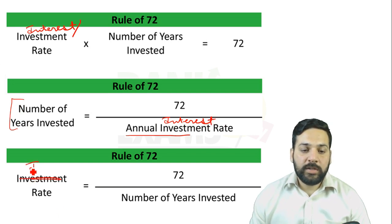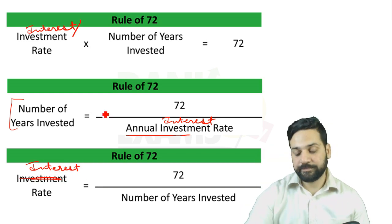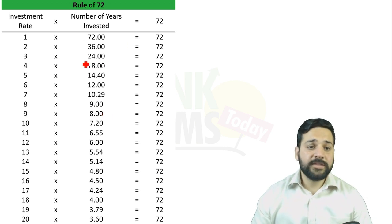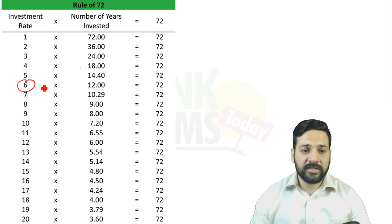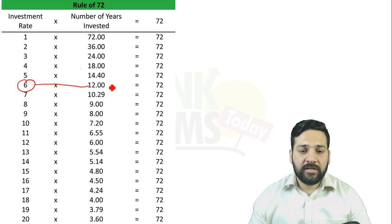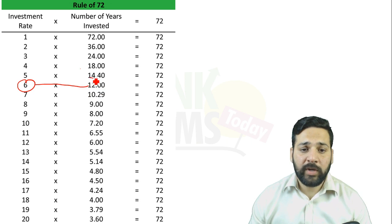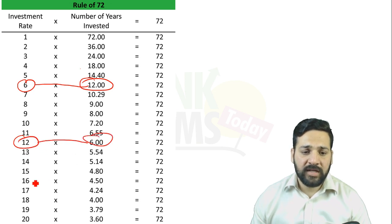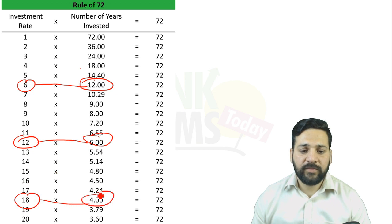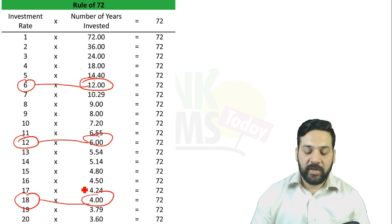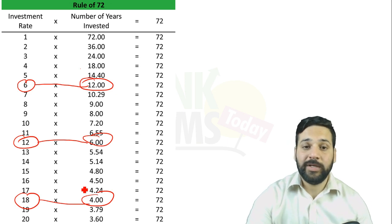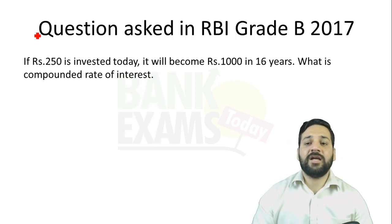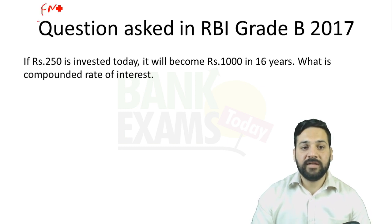Similarly, rate of interest equals 72 divided by number of years invested. So if the rate of interest is 6%, you need to invest for 12 years to double your money. If the rate is 12%, you need to invest for 6 years. If it is 18%, you need to invest for 4 years. Note that the interest is compounded annually. This was the question asked in the RBI Grade B 2017 FM paper as a two-mark question.